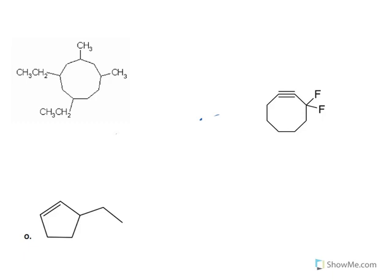Since I have ethyl and methyl groups, I should give the lowest possible number to the ethyl, not the methyl. Let's do all possible numbering choices. If I go with the first numbering option — counting one through nine — I will have substitutions on one and three for the ethyl group, and on six and eight for the methyl group.